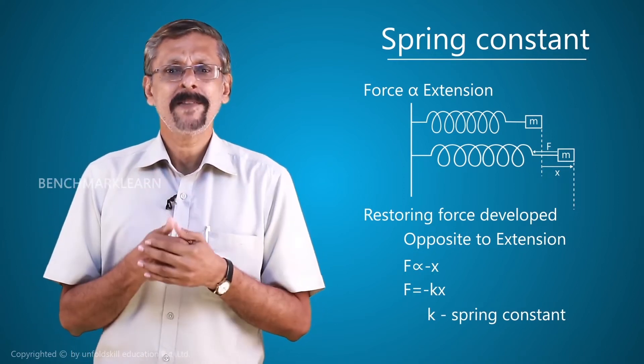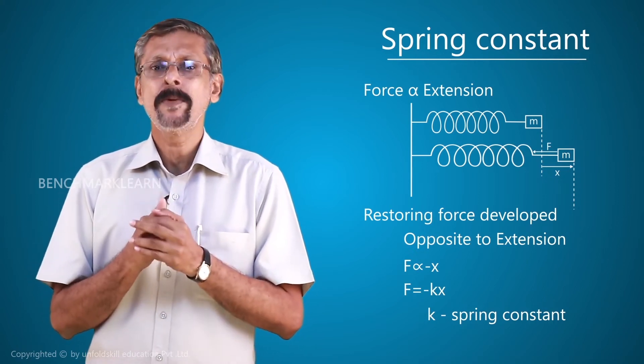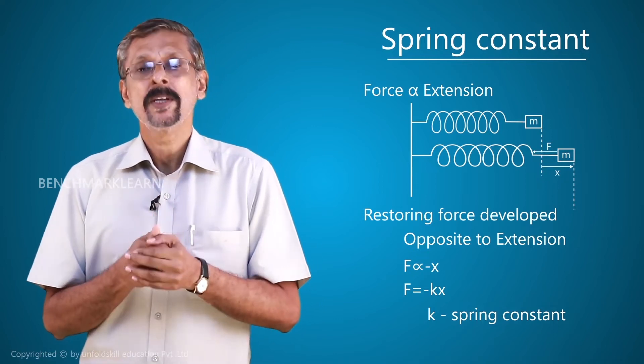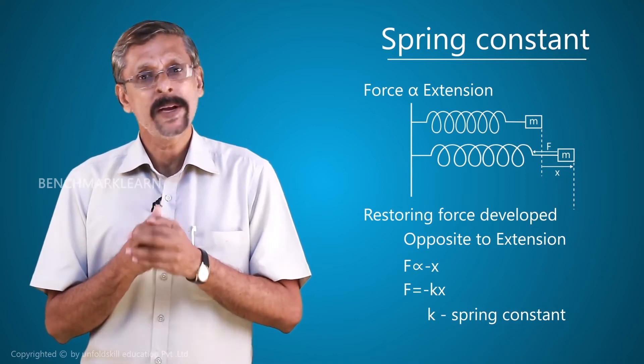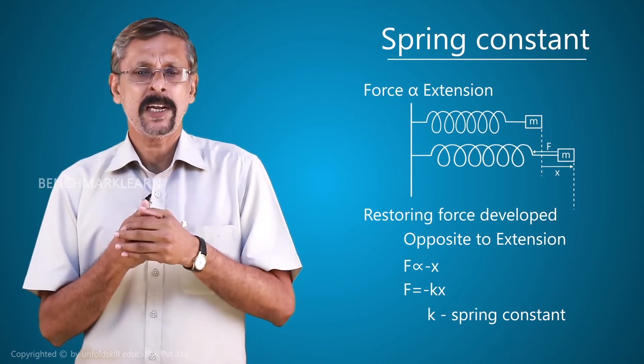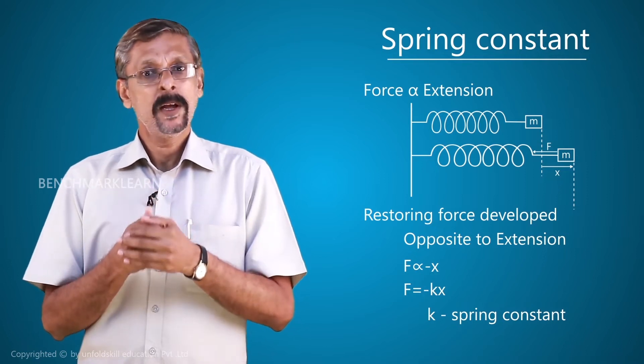What is the relevance of this spring constant? When you have a light spring, the value of k will be very small, whereas if it is a very heavy spring, the value of k will be very big. By looking at the values of k, you will be able to say whether it is a light spring or a heavy spring.